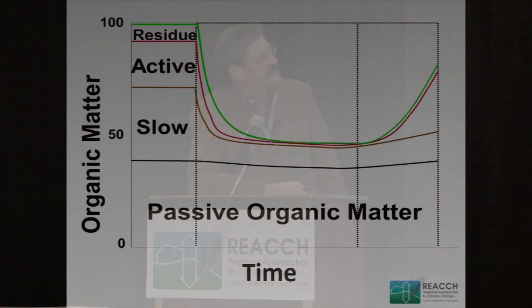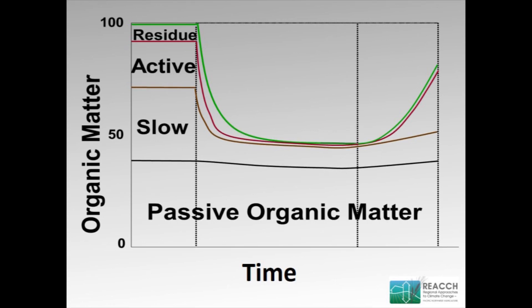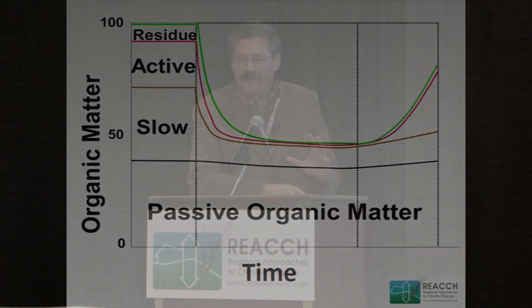Much of the organic matter we've lost has occurred in these more active pools. When we change management and start to adopt different practices that lead to increases in soil organic matter, much of that is impacting these more active fractions. So there's a real interest in focusing on this active soil organic matter — how do we measure it, and what does it mean from the standpoint of our organic matter and our soils' function?